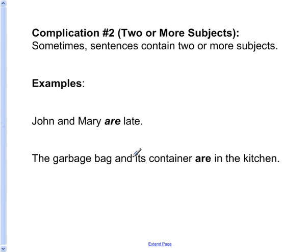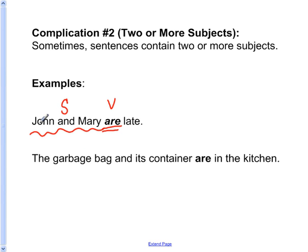Let's look at complication number two. Sometimes there are two or more subjects, not just one. Let's look at the first example: John and Mary are late. The main verb of this sentence is are. The subject is not just Mary or just John — it's John and Mary. Therefore, the subject of this sentence is plural, even though there's only one John and one Mary. Together, it's a plural subject, so the form of the verb that agrees with the plural subject is are.